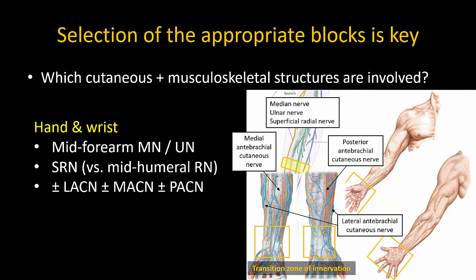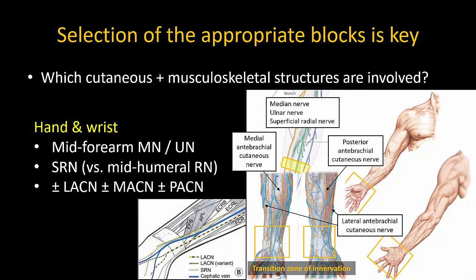For example, the lateral antebrachial cutaneous nerve, seen here as the dashed line, will often innervate the dorsum of the first web space of the hand. The simplest way to cover any patchy areas of cutaneous sparing is to perform subcutaneous infiltration of local anesthetic proximal to the cutaneous incision.